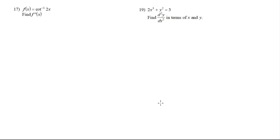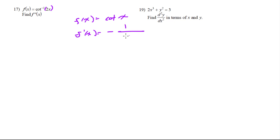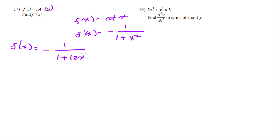For number 17, we want the second derivative of inverse cotangent, or arc cotangent of 2x. The derivative of arc cotangent of x is negative 1 over 1 plus x squared. Using the chain rule, the first derivative is negative 1 over 1 plus (2x) squared times the derivative of the inside. Simplifying: negative 2 over 1 plus 4x squared.